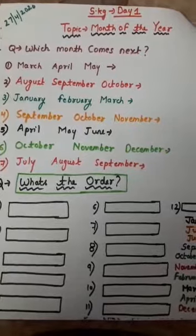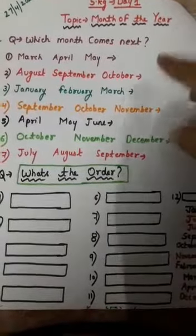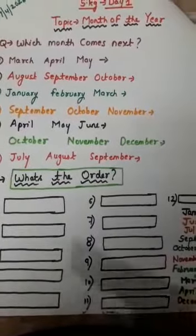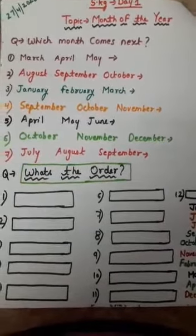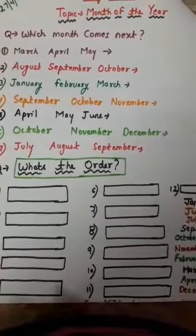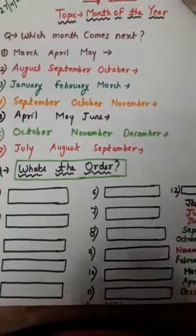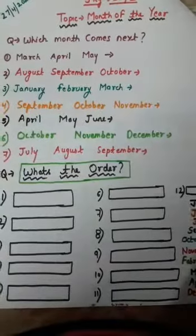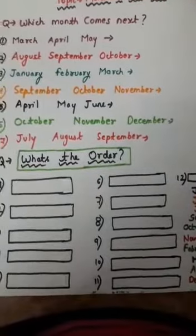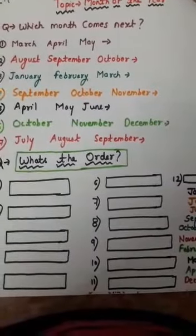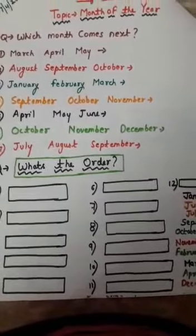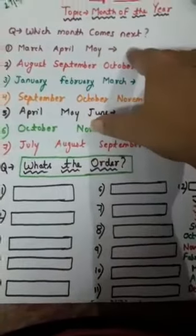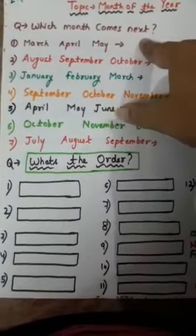What you have to do is see here. The question is: which month comes next? First of all, you have to arrange the months. March, April, May — after May what comes? You have to count the months from January: January, February, March, April, May, then June. So what comes next after May? June.